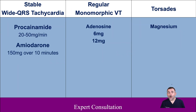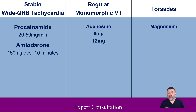If a monomorphic wide complex rhythm is present and the patient is stable, expert consultation is advised, as treatment has the potential for harm. For stable, regular monomorphic VT, IV adenosine is relatively safe for both treatment and diagnosis. The first dose is 6 mg with a second dose of 12 mg if needed. Additional treatments include an anti-arrhythmic infusion such as amiodarone 150 mg over 10 minutes, or procainamide 20 to 50 mg per minute until the arrhythmia is suppressed, hypotension ensues, QRS duration increases by more than 50%, or a maximum of 17 mg per kg is reached.